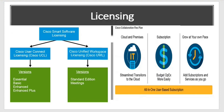In both, we have different versions. For User Connect Licenses, we have Essential, Basic, Enhanced, and Enhanced Plus versions. For Workspace Licensing, we have Standard Edition and Meeting Licenses. These are the main Cisco Smart Software Licensing types, of two kinds.